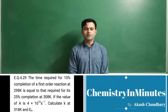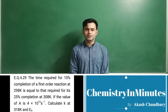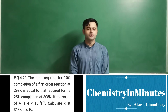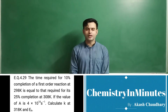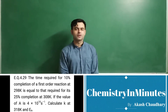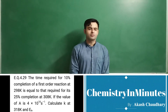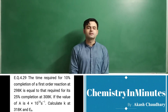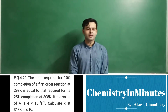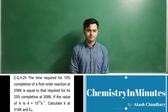The question is: the time required for 10% completion of a first order reaction at 298 Kelvin is equal to that required for its 25% completion at 308 Kelvin. If the value of A is 4 into 10 to the power 10 second inverse, then calculate k at 318 Kelvin and Ea.